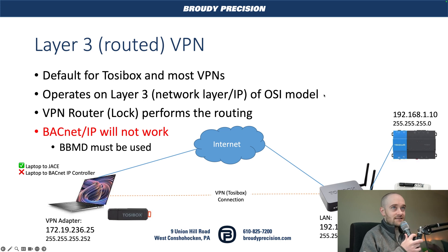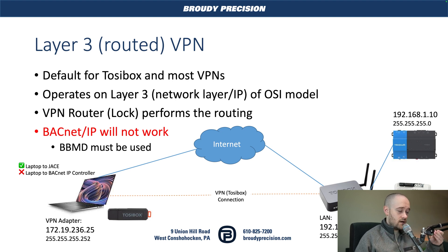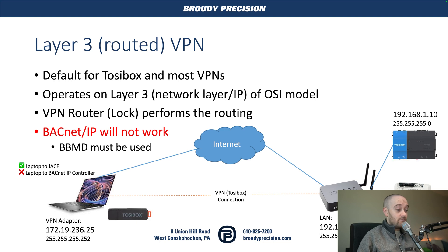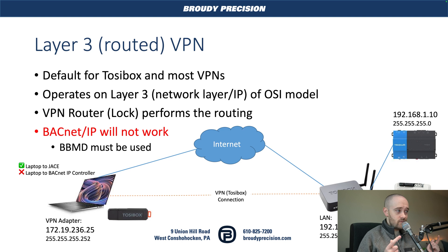We're going to start out with the default settings on a Tazibox. Most VPN solutions are going to default you to this style of doing things. It works great 99% of the time, but if you're using BACnet IP, you will run into issues with the way that you connect to your BACnet IP devices on that remote network — they just won't work. That's because BACnet IP relies a lot on broadcast communications, and broadcast communications only work on your subnet. Routers will not route broadcast packets intentionally, because obviously big problems could happen, so they intentionally don't do that.